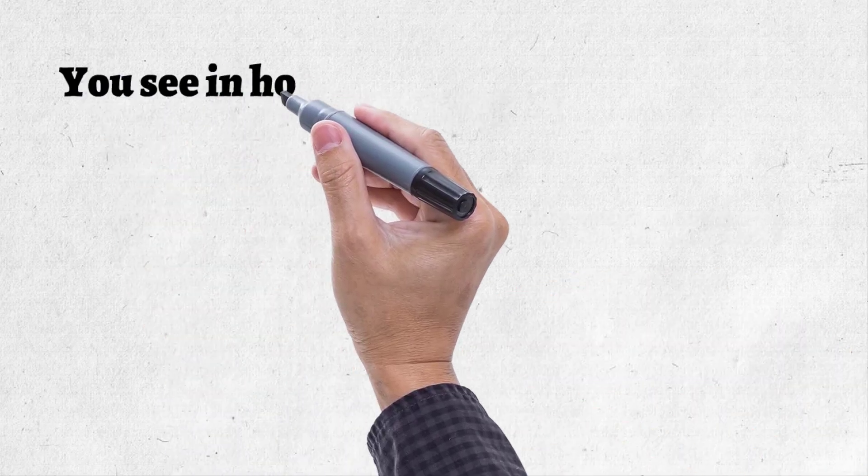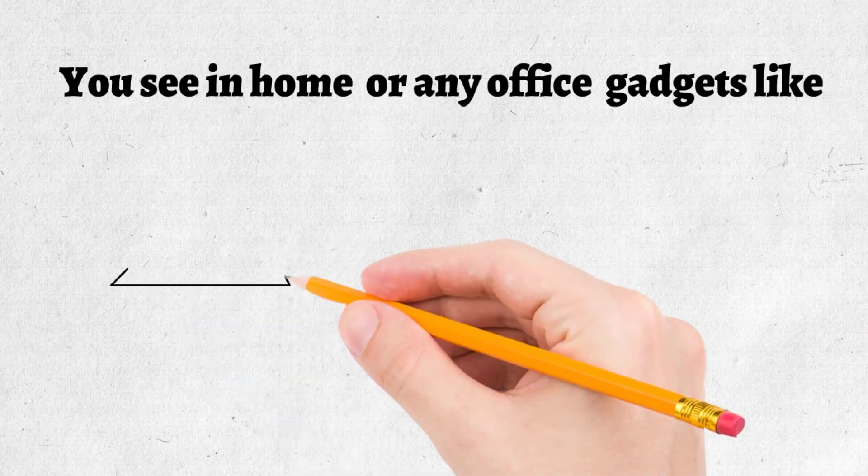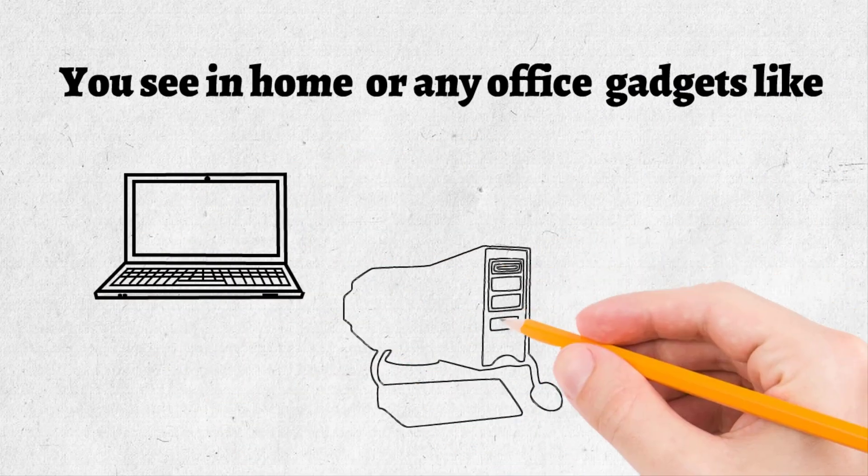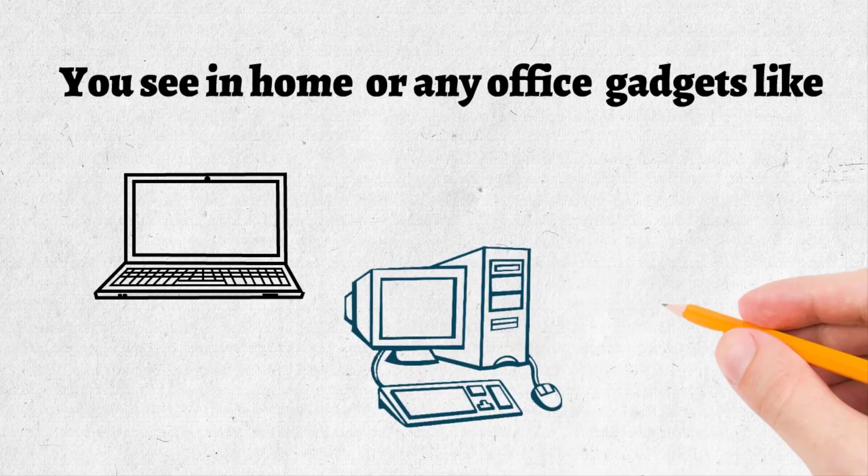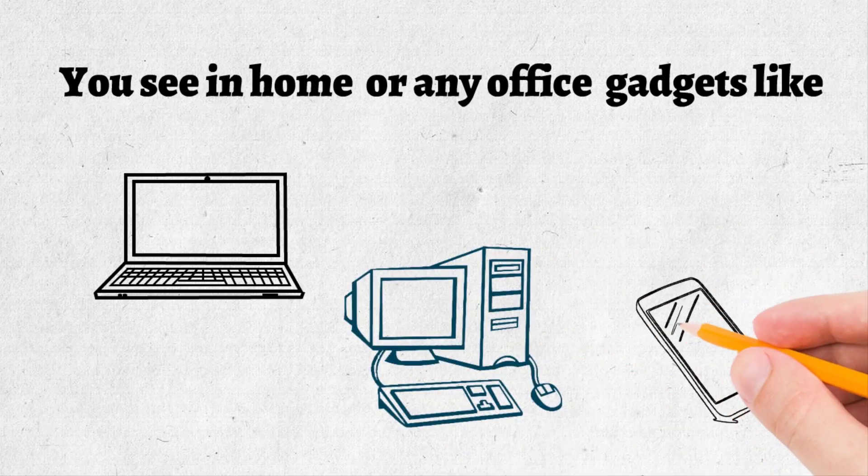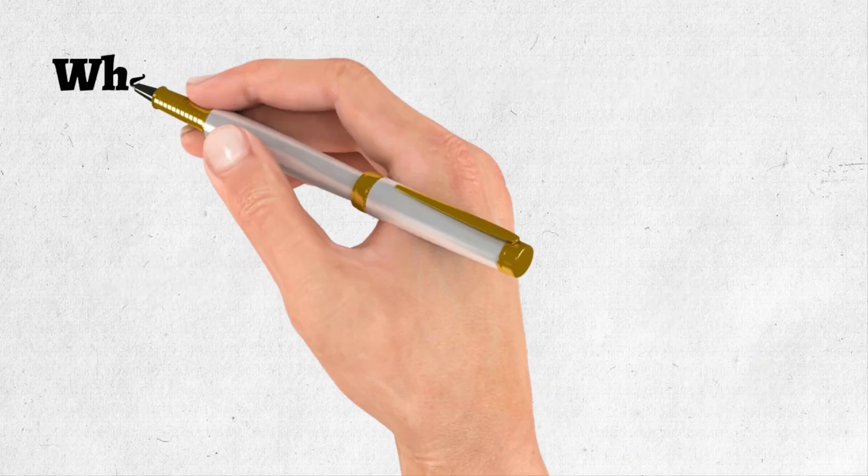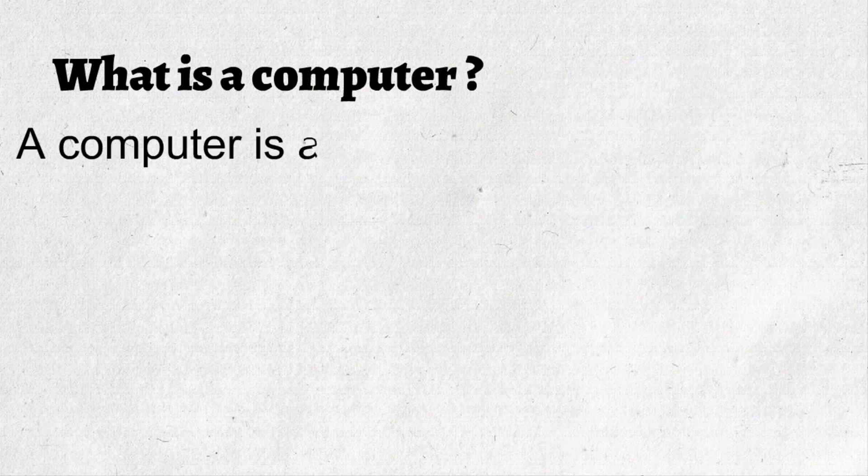Dear children, you see in your home or any office gadgets like laptop, PC, or a smartphone. All of these are one type of computer. Now we will learn what is a computer. A computer is an electronic machine which runs on electricity and works very fast.